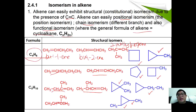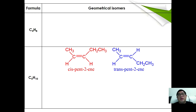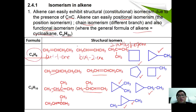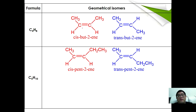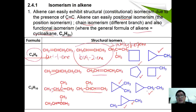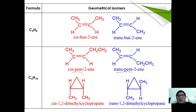Other than structural isomerism, the presence of the C=C means alkenes can also exhibit geometrical isomerism. For C4H8, but-2-ene can exhibit geometrical isomerism, giving cis-but-2-ene and trans-but-2-ene. For C5H10, pent-2-ene is the structure that exhibits geometrical isomerism, giving cis-pent-2-ene and trans-pent-2-ene. Looking back at the cycloalkane isomers, 1,2-dimethylcyclopropane can also exhibit geometrical isomerism: cis-1,2-dimethylcyclopropane and trans-1,2-dimethylcyclopropane.